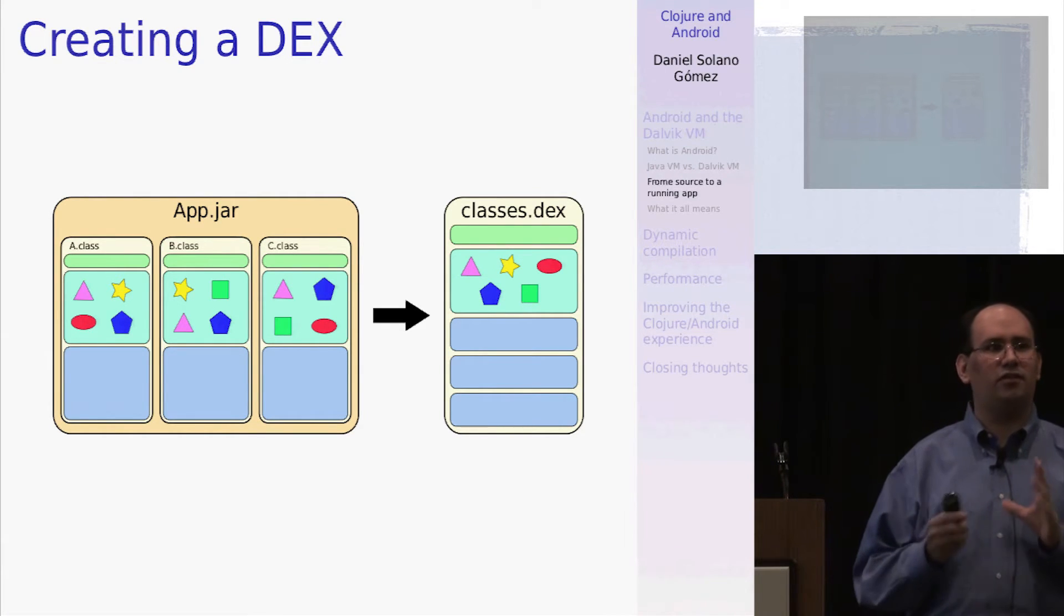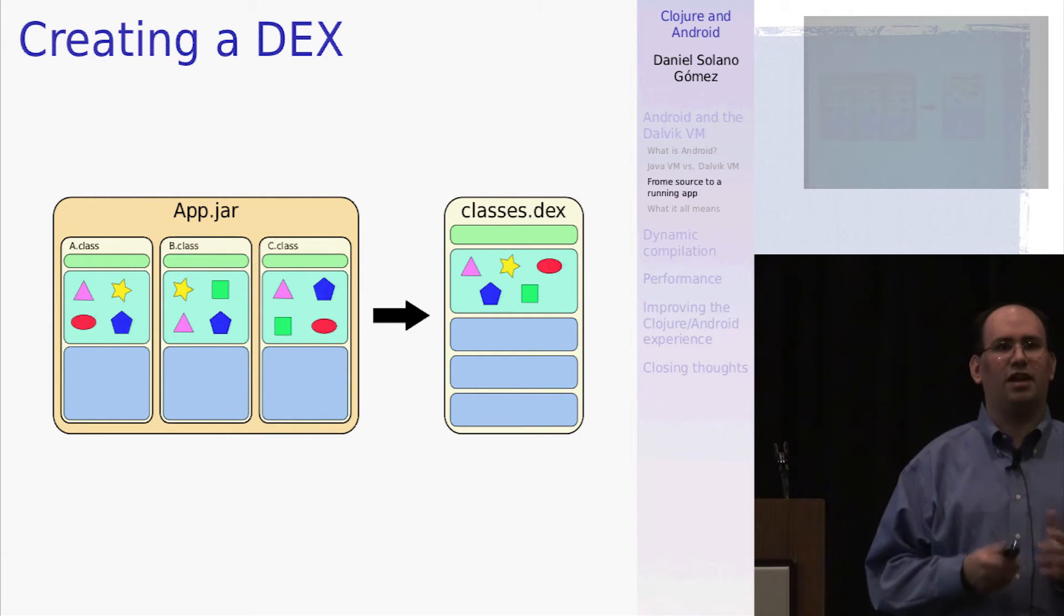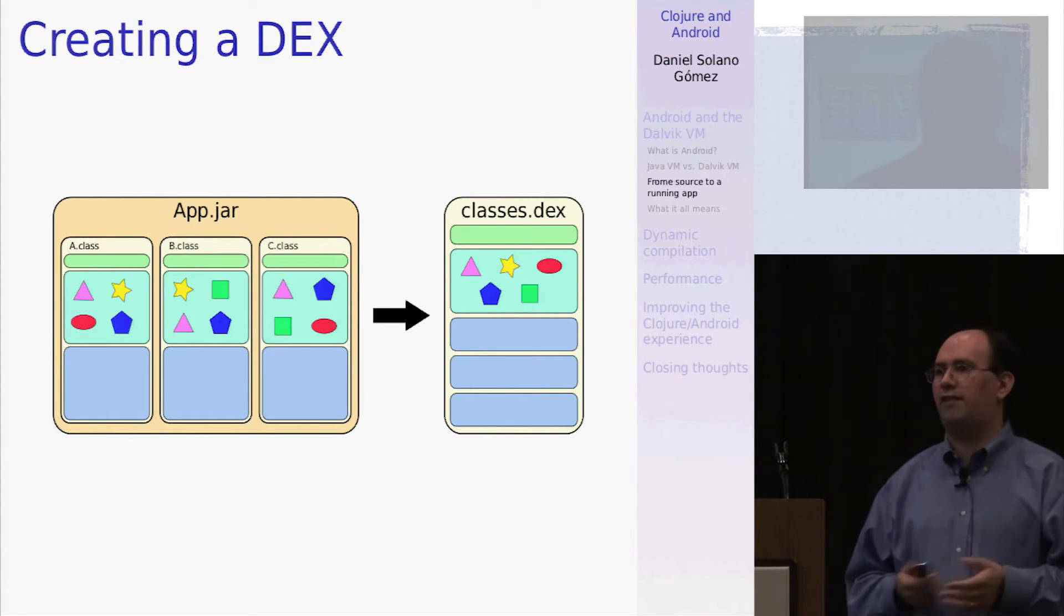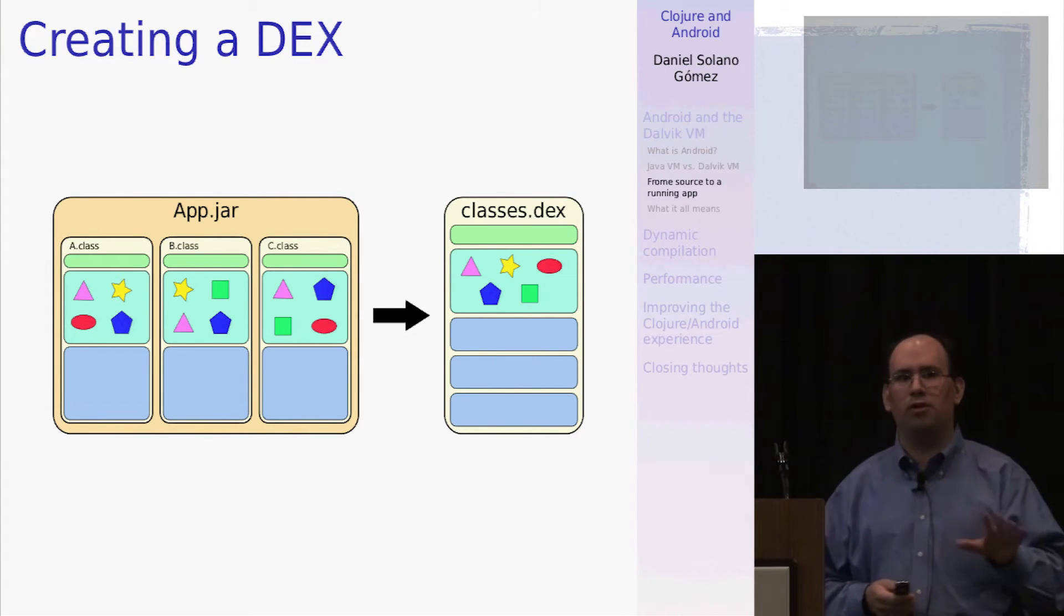And so they have their own optimized file format, the DEX file, that has its own header and its own constant pool. But as you add classes to this DEX file, it doesn't repeat any of the constants. So adding A, B, and C, we have only one copy of each constant. And this leads to a big reduction in the application sizes. I think off the top of my head, Clojure, the jar file is about three megabytes or about, and it compiles down to about a one megabyte DEX file.